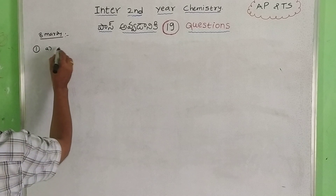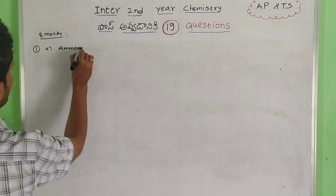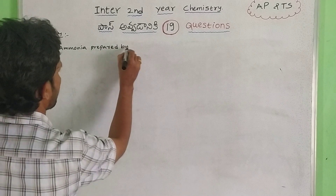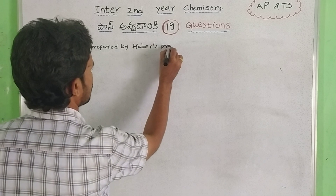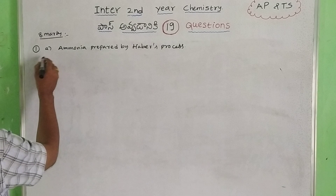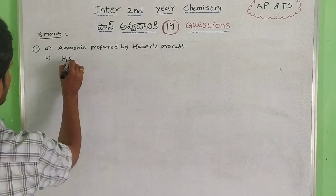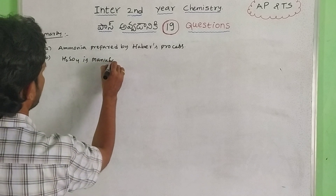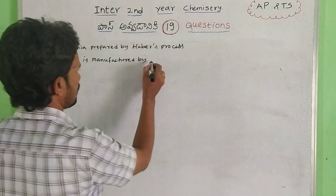First one: Ammonia prepared by Haber's process. This is the preparation process and the properties. Second one: H2SO4 — sulfuric acid is prepared by the Contact process.